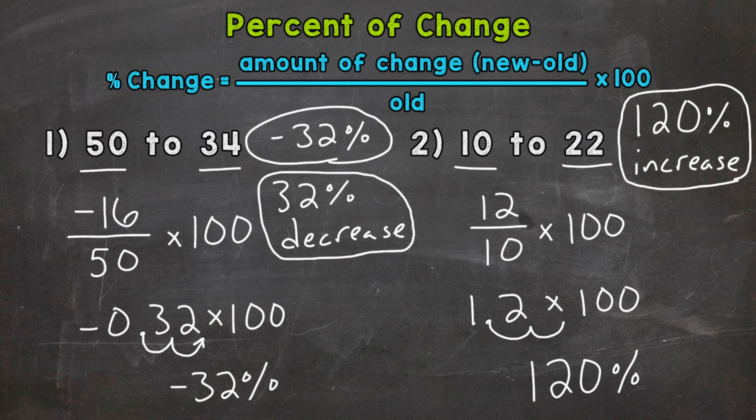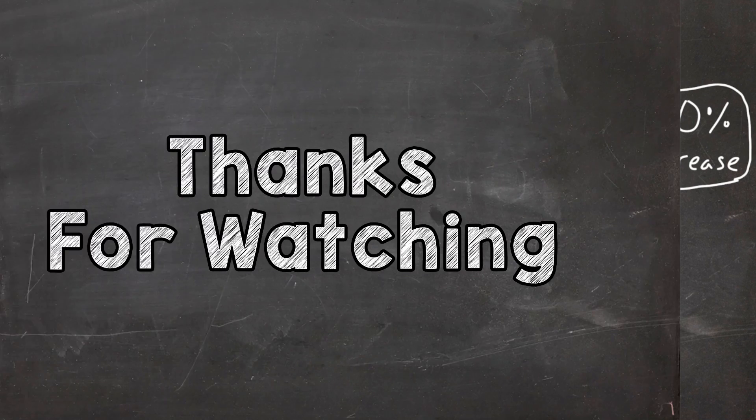So for example, number one, we started with a 50, and now we have a 34. So we decreased in value. So that's going to be a percentage decrease. Number two, we started with a 10, and now we have 22. So we increased in value. And that's going to be a percentage increase. So I hope that helped.